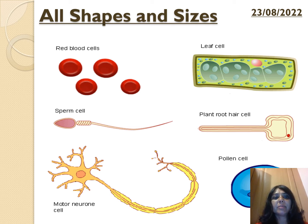Next we have a sperm cell. You can see it's got a sharp head and then a long tail. The sharp head's job is to get through into the egg, and the job of the tail is to swim. You can see it's a streamlined structure that allows it to move when it's going to meet the egg.